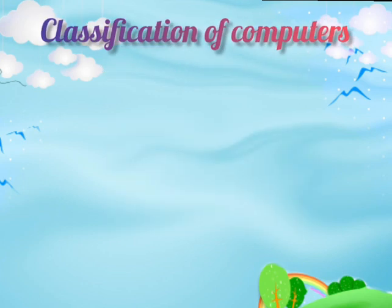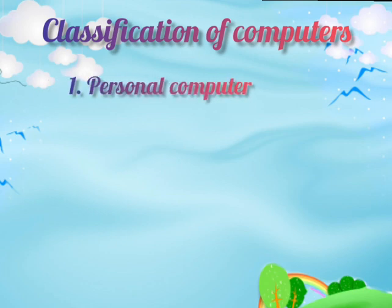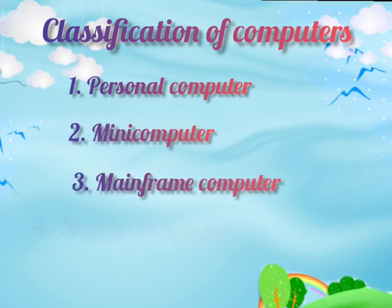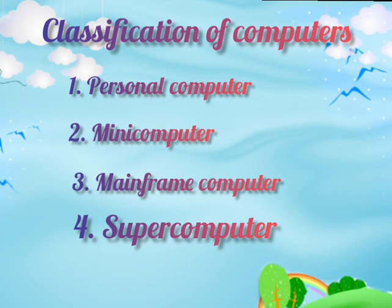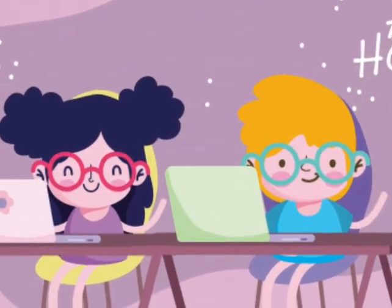So students, has everyone understood this chapter on classification of computers? Tell me the four types of computers. Yes — first, Personal Computer; second, Mini Computer; third, Mainframe Computer; and fourth, Supercomputer. Very good. I hope everyone has understood this chapter on classification of computers. Thank you. Stay home, stay safe.